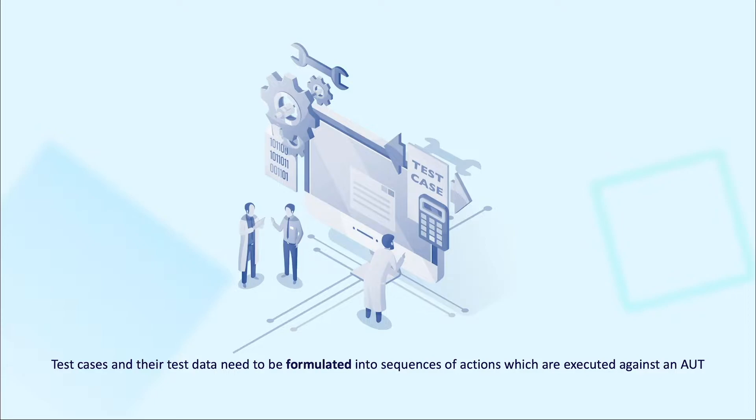Scripting an automated test, by definition, indicates the process in which a test case is translated into sequences of actions executed against a system under test. To be more specific, these sequences of actions can be documented in a test procedure and implemented in a test script. Besides, automated test cases also define test data for the interaction with the system under test, including verification steps to ensure the result is as expected.